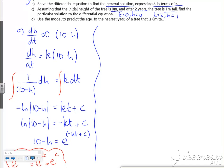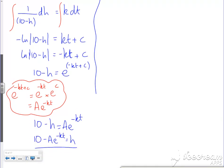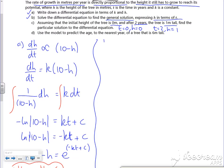So h = 10 - Ae^(-kt). This is part C. When t=0, h=0. So 0 = 10 - Ae^0. e^0 is 1, so 0 = 10 - A. Therefore A = 10.